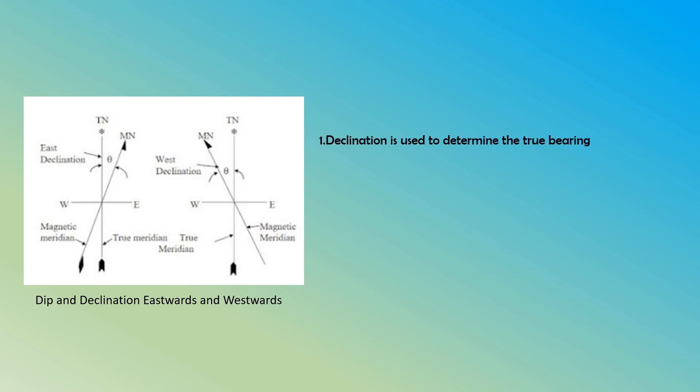In the figure, Tn represents the true north of the true meridian and Mn represents the magnetic north. If the magnetic declination is on the left side of the true meridian, the angle formed between the two meridians is declination west and is considered negative. If it is formed on the right, it is called declination east and is considered positive. This declination is used to determine the true bearing of a particular line. When a compass is used, the bearing obtained is a magnetic bearing, and after completing the survey, the declination at that point can be determined. True bearing can then be calculated as: true bearing equals compass bearing plus or minus declination, where the sign depends on whether the declination is east or west.